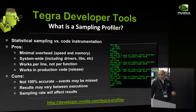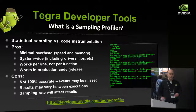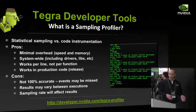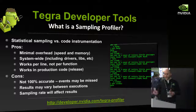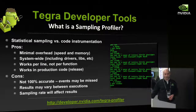The cons are that it's not 100% accurate — it's a statistical sample. If you have a lot of small functions and don't run a long enough sampling period, you may miss some functions. This should usually be a first pass for optimization, and then once you narrow it down to a smaller region, you can use an instrumented profiler, for example inside the GCC compiler toolchain.